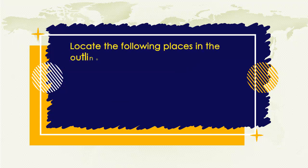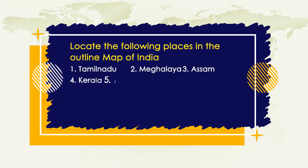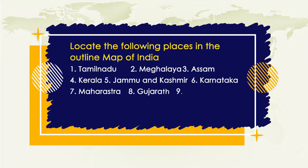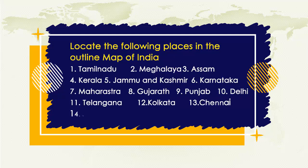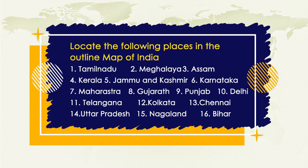Locate the following places in the outline map of India: 1. Tamil Nadu, 2. Meghalaya, 3. Assam, 4. Kerala, 5. Jammu & Kashmir, 6. Karnataka, 7. Maharashtra, 8. Gujarat, 9. Punjab, 10. Delhi, 11. Telangana, 12. Kolkata, 13. Chennai, 14. Uttar Pradesh, 15. Nagaland, 16. Bihar.